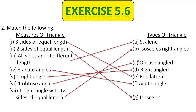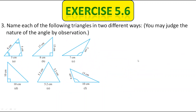Now we will move to the third question: Name each of the following triangles in two different ways. The types of triangles are based on two ways — based on angles as well as based on sides — so we can name any triangle using these two ways. You may judge the nature of the angle by observation. The first one has two sides of equal length — 5 cm and 5 cm — and one different side. So this triangle is called isosceles in terms of sides.